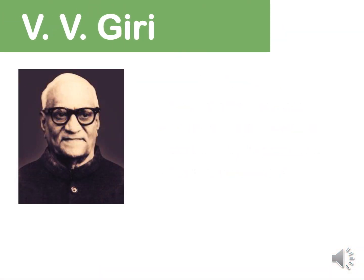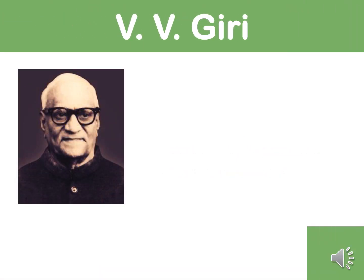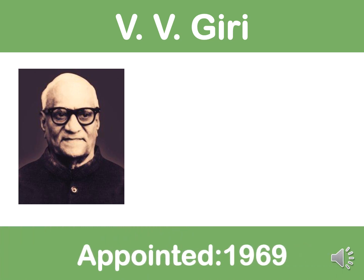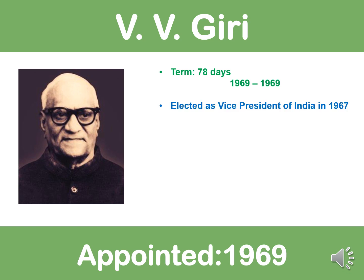The next president was V.V. Giri. He was an appointed president of India because Zakir Hussain died in office. He was appointed in 1969 and served a term of 78 days. He was elected as vice president of India in 1967 and was appointed as an acting president after Zakir Hussain's death.